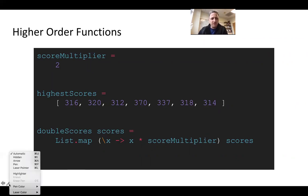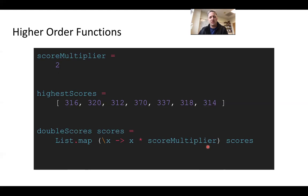Let me bring up my laser pointer. So for example, here's an anonymous function. Remember, anonymous functions begin with backslash. This is the name of the parameter x, this is the indicator, and this is the body of the function. So an anonymous function that just takes whatever x is and multiplies it by the score multiplier. Notice that score multiplier is a variable that's been defined up here, so we're capturing that variable in the closure of this anonymous function, passing the whole thing to list.map and applying it to the highest scores list.